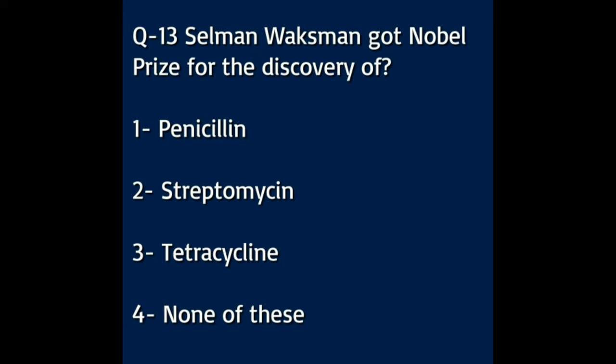Question number thirteen: Selman Waksman got the Nobel Prize for the discovery of — Option A: penicillin. Option B: streptomycin. Option C: tetracycline. Option D: none of these. The answer to this question is streptomycin.